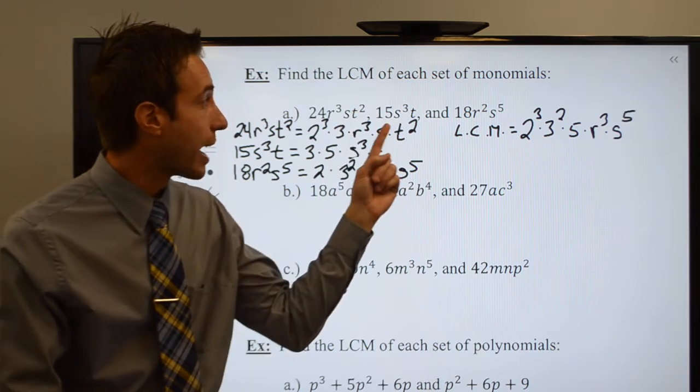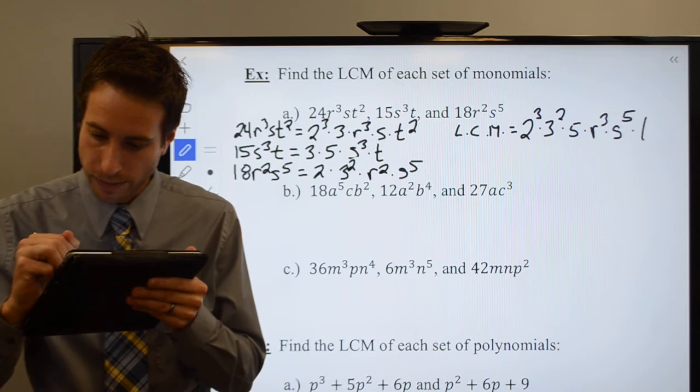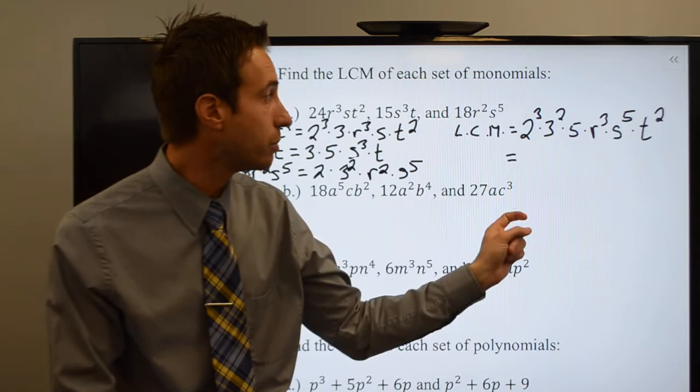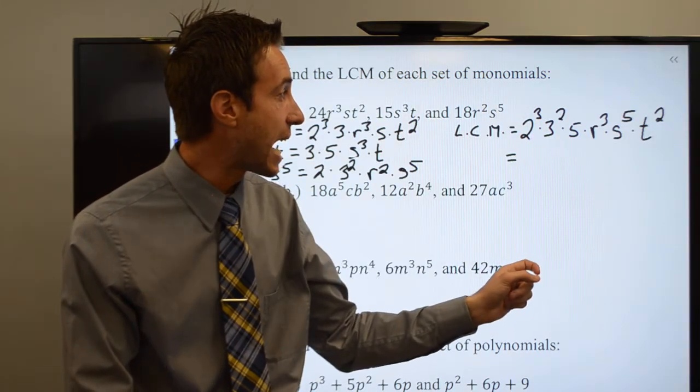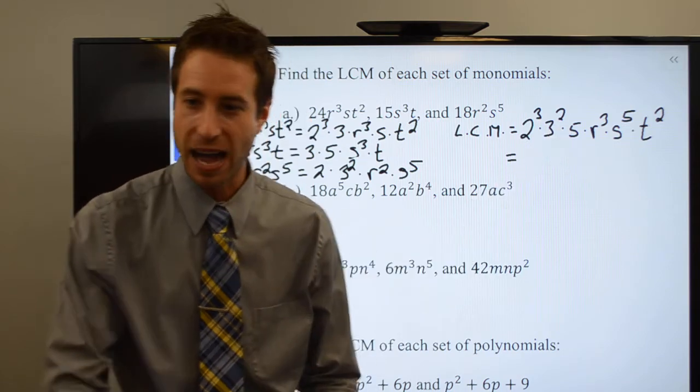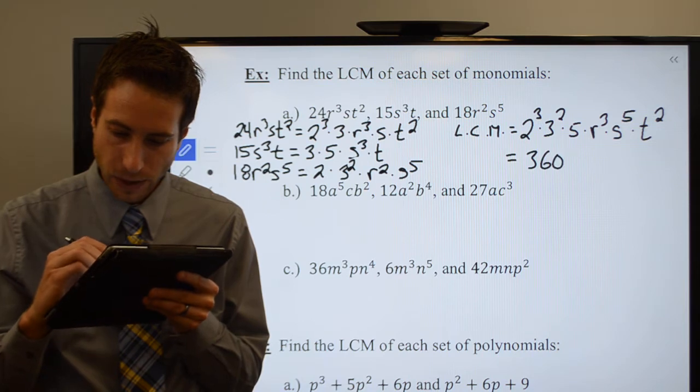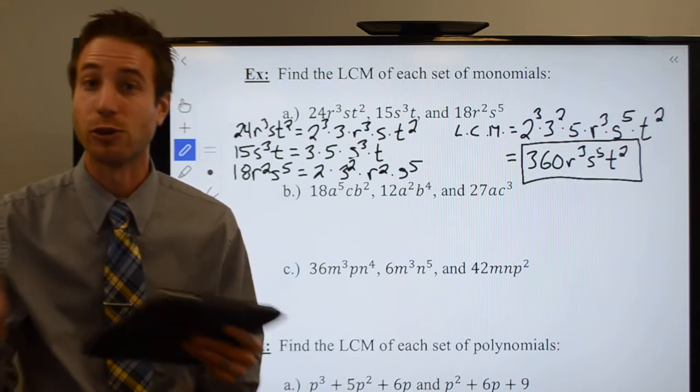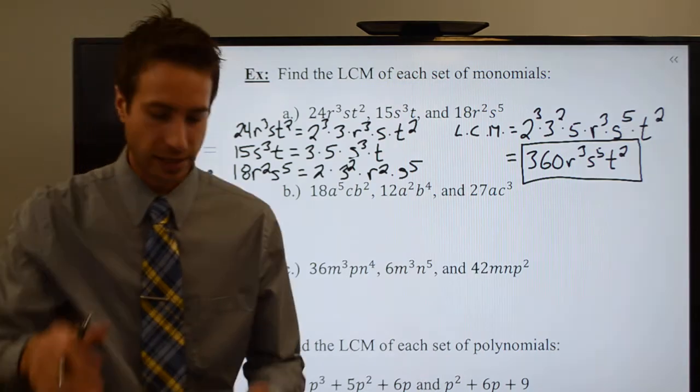I have a t² and a t, I keep the t². Multiply those guys together. 2³ is 8, 3² is 9, multiply that by 5. Quick calculator thing, I wind up with 360. r³, s to the fifth, t². That's the LCM. So we found the LCM of those three monomials. Let's keep going.